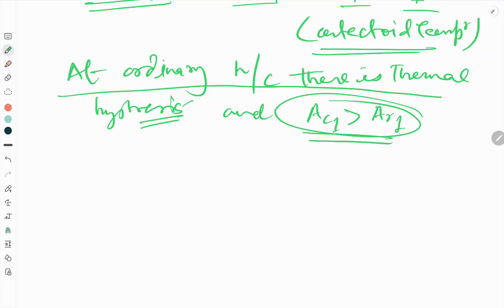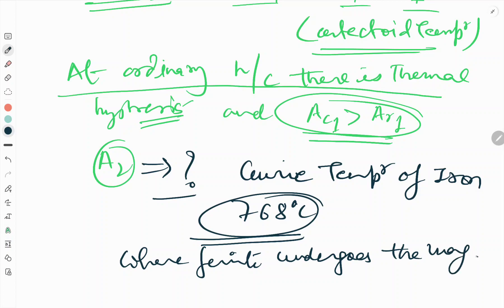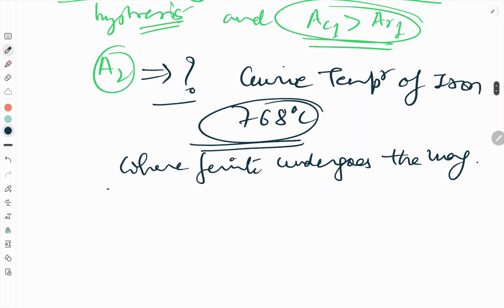The next higher critical temperature is A2. A2 is the Curie temperature of iron, that is 768 degree centigrade temperature, where ferrite undergoes the magnetic transition.